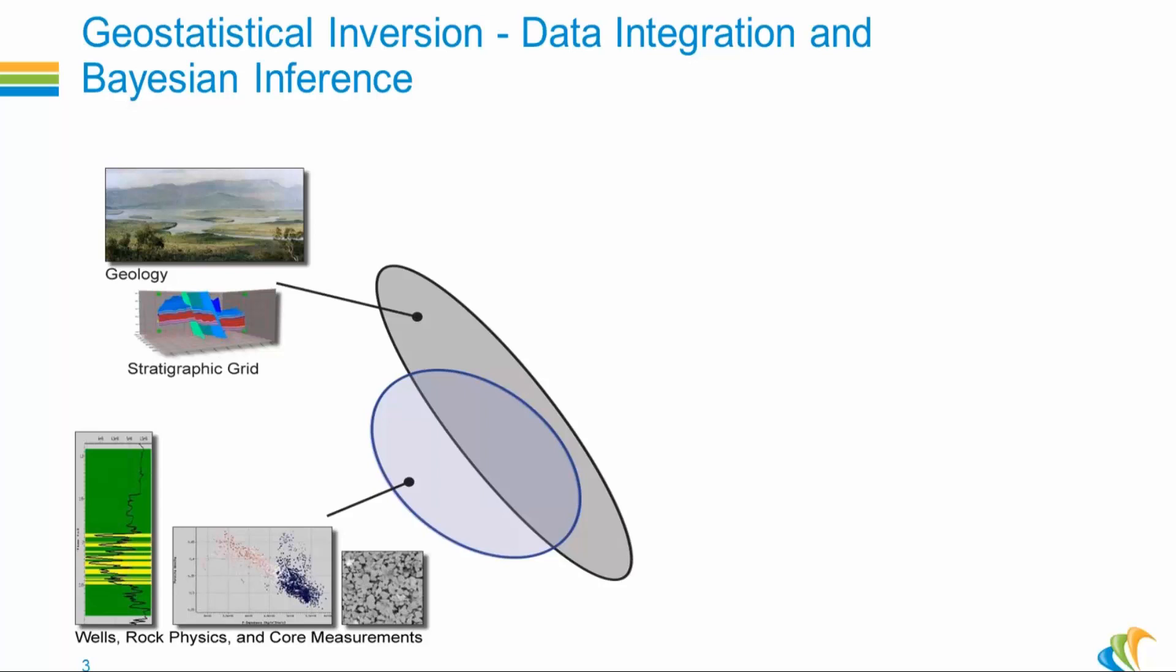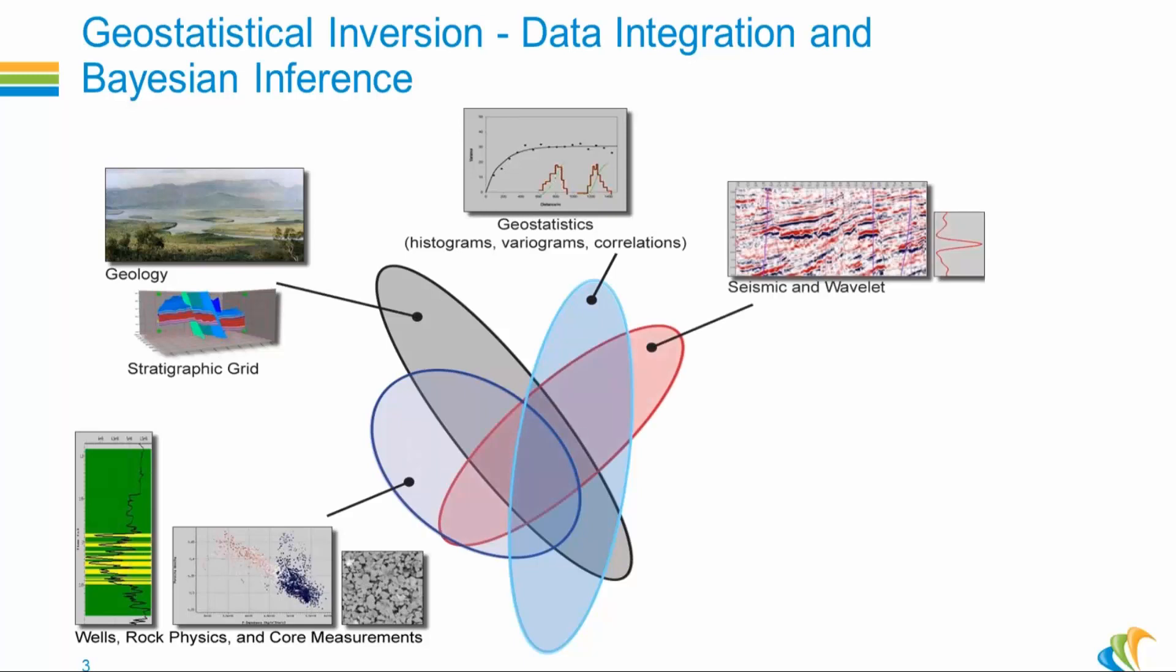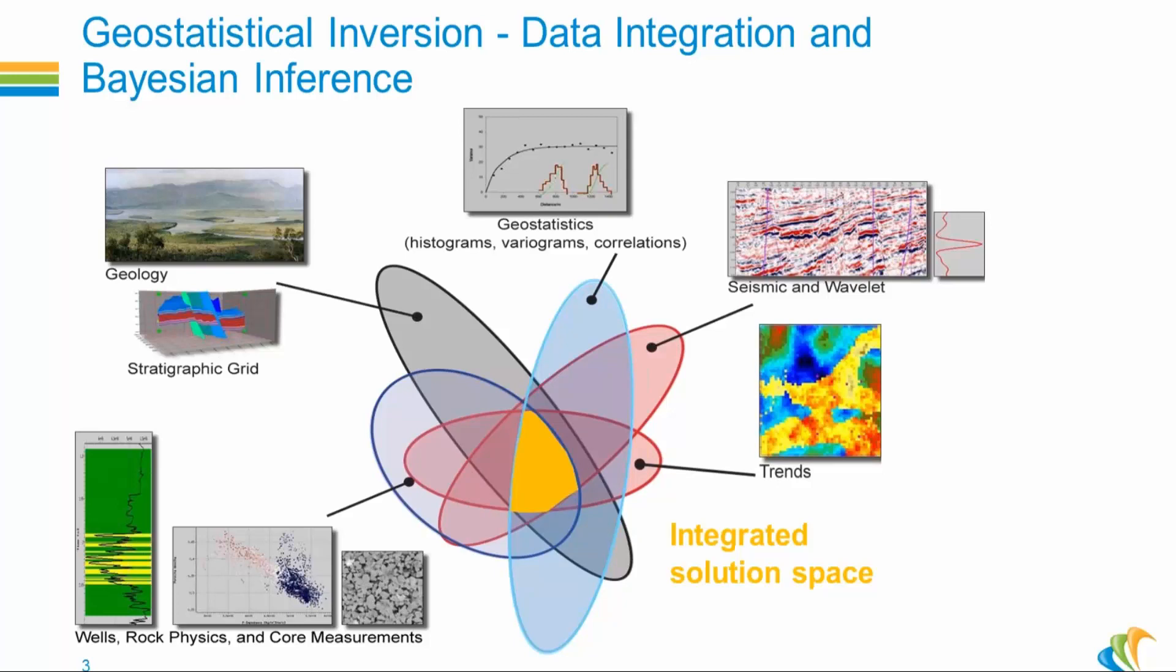The problem can be constrained even more if we add geostatistics, for example knowledge about the prior proportion of facies, variograms to model the lateral correlation of the data, etc. And then seismic of course, trend information such as seismic velocities. So in the end, the integrated solution space is the set of answers which satisfies all the data simultaneously.